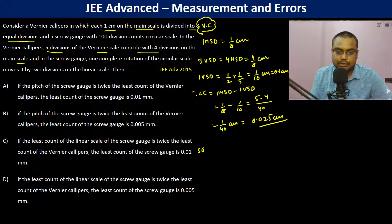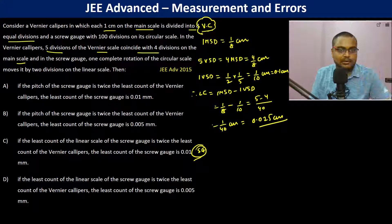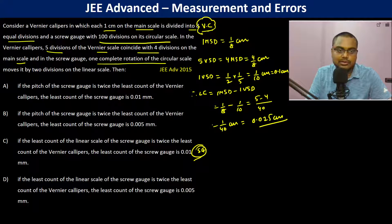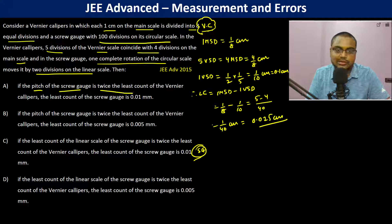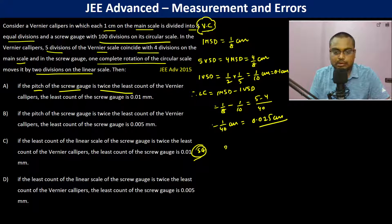Now for a screw gauge: there are 100 divisions on the circular scale, and one complete rotation of the circular scale moves it by two divisions of the linear scale. The pitch of the screw gauge is twice the least count of the vernier caliper, so pitch = 2 × 0.025 centimeter = 0.05 centimeter.